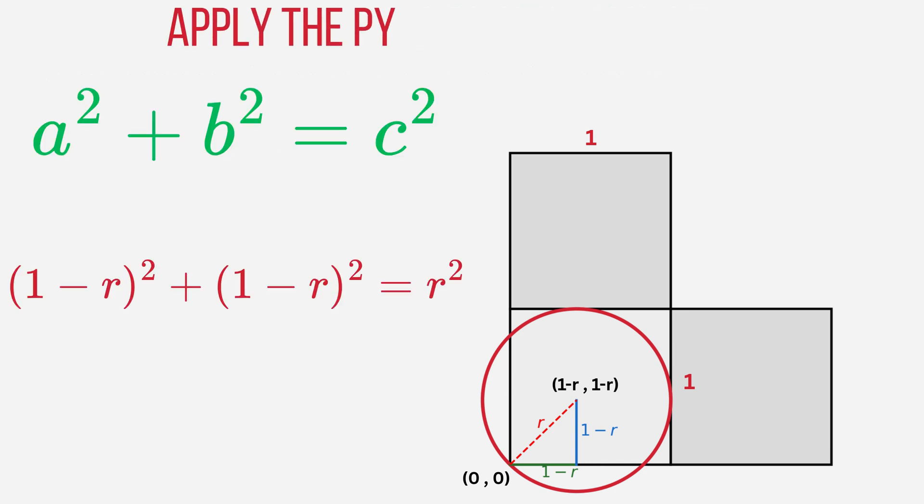This is a right triangle so we can use the Pythagorean Theorem. Each leg is 1 minus R and the hypotenuse is R. That gives us the equation (1-R)² plus (1-R)² equals R².